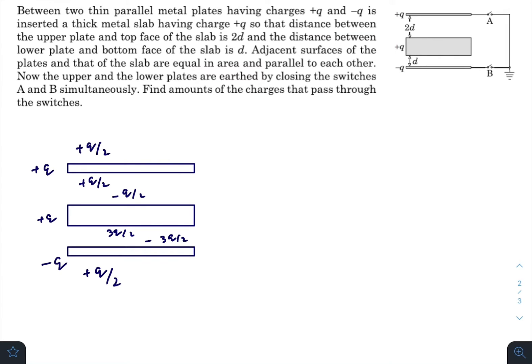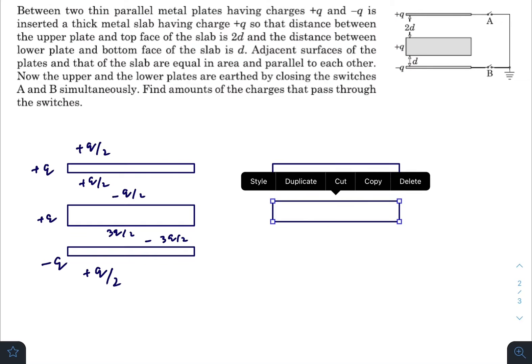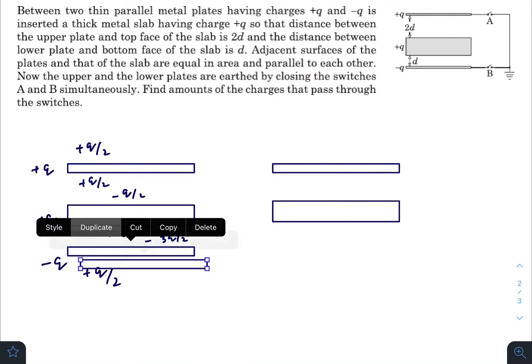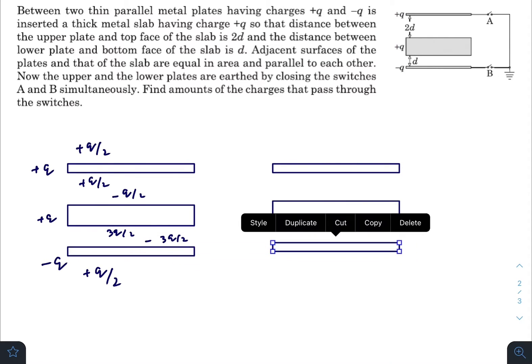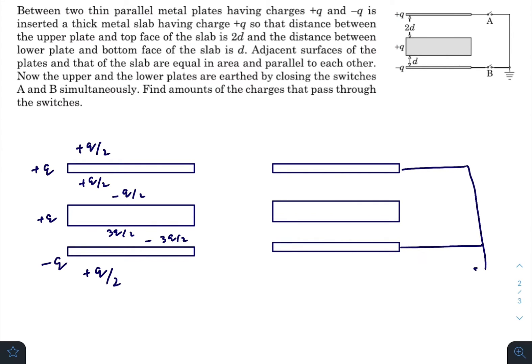Now after this switch is connected, the charge distribution will change. The charges on the outermost surfaces of the outermost plates will be zero as they are grounded.